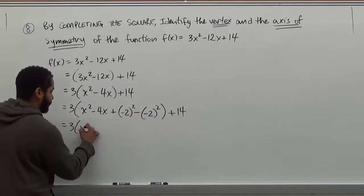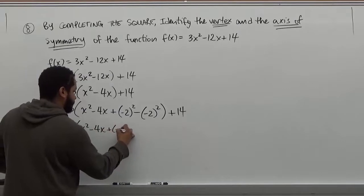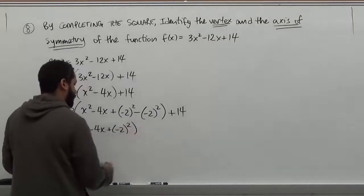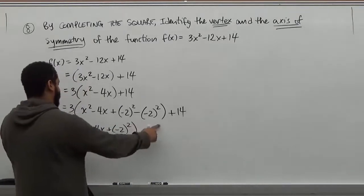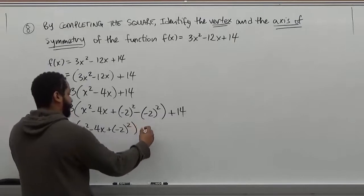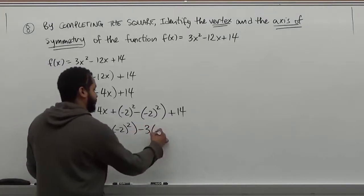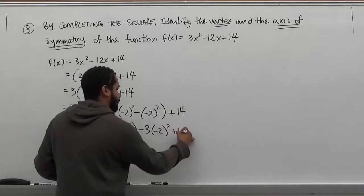So we get 3(x² - 4x + (-2)²). This is coming out. So when it comes out, it has to be multiplied by the 3. So this becomes a -3. And we have still the -2² + 14.